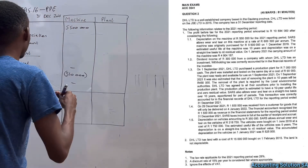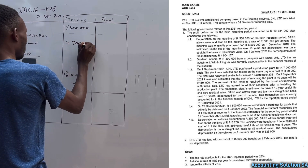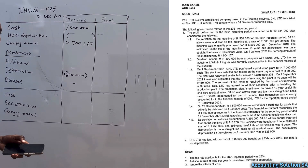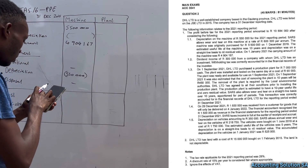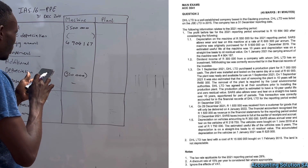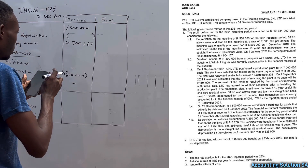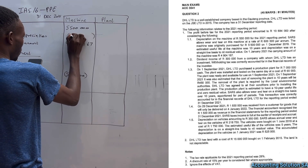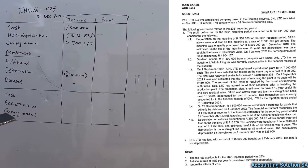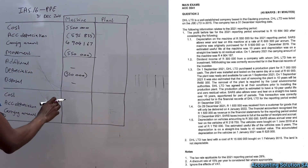On 1 January 2021, the carrying amount at the beginning of the year was 4,904,167. To verify this, you get the difference between the cost of 5,500,000 and the carrying amount of 4,904,167, which gives you accumulated depreciation already subtracted of 595,833.